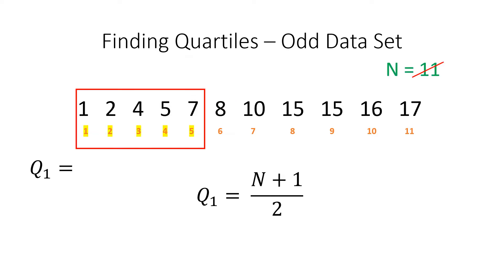Because we are only taking the first section of this set, our n is now equal to 5. Using our formula for Q1, we plug in our numbers. 5 plus 1 gives us 6, and 6 divided by 2 gives us 3. The 3 that we just calculated refers to the position, Q1 is equal to 4.